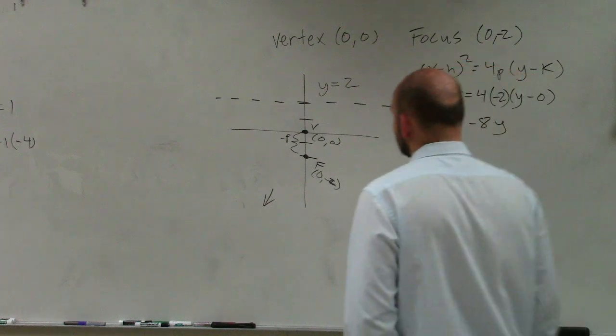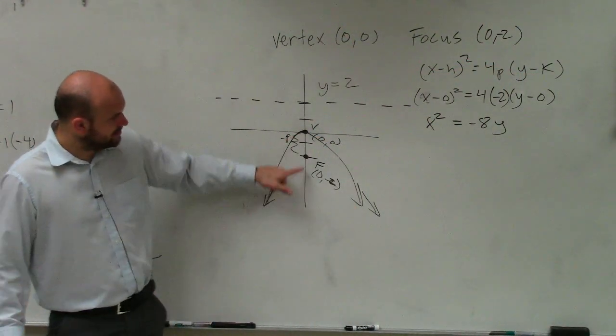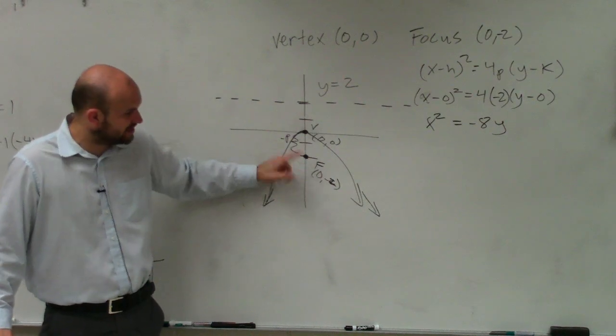p is your distance. No, no, no. I know that on this graph. Negative 2. Yeah, because it says the focus is at 0, negative 2. So the distance from the vertex to the focus is negative 2.